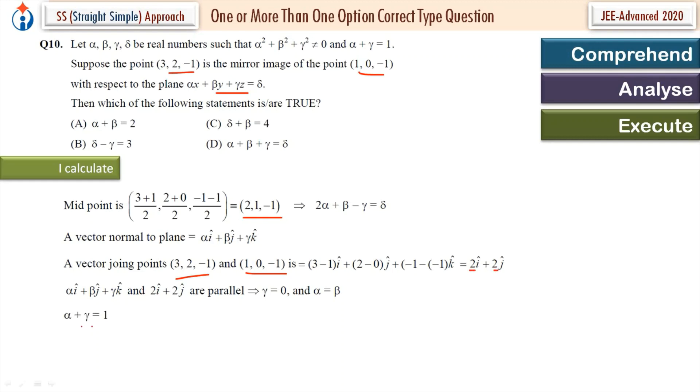And this is another result which is given: α + γ = 1. So that gives us γ = 0, α = 1, and β = 1. And from this we get the value of δ also, which is 3. So we have all four values α, β, γ, δ. Let's check the options.